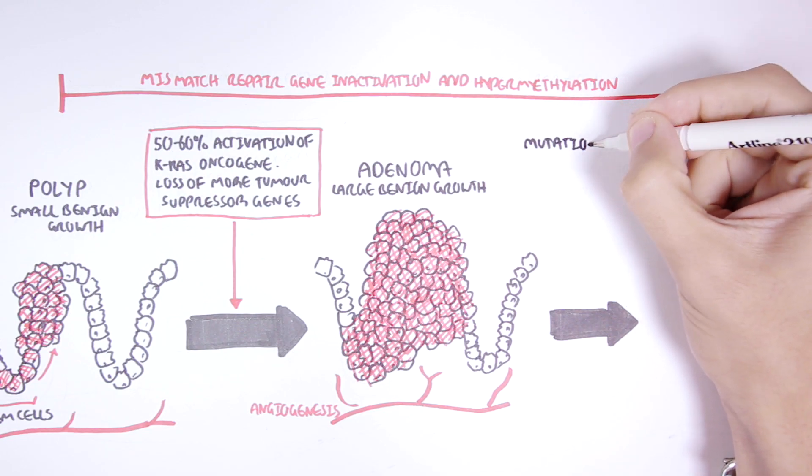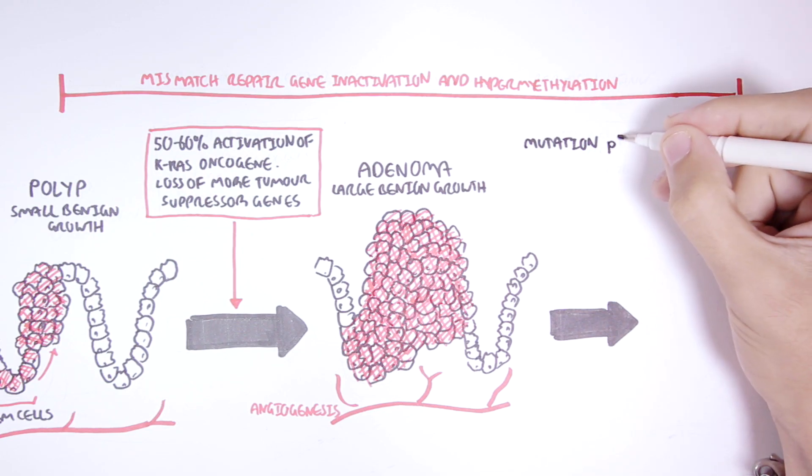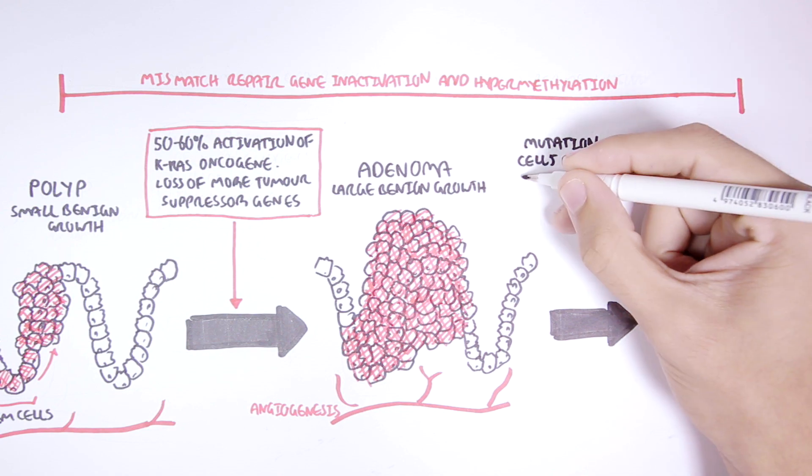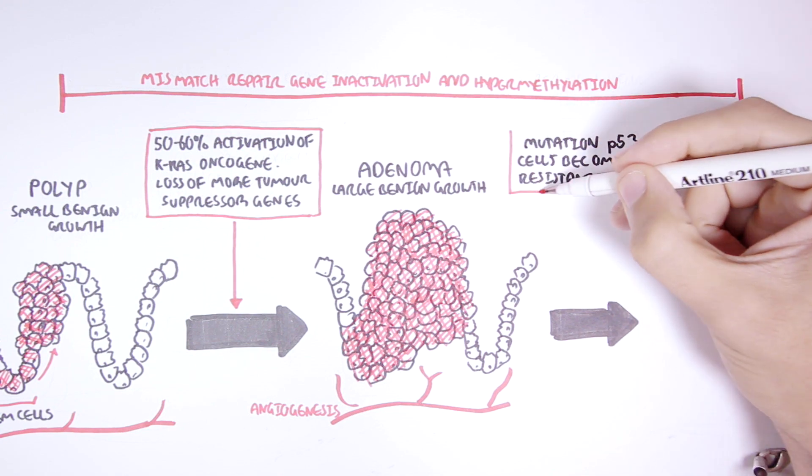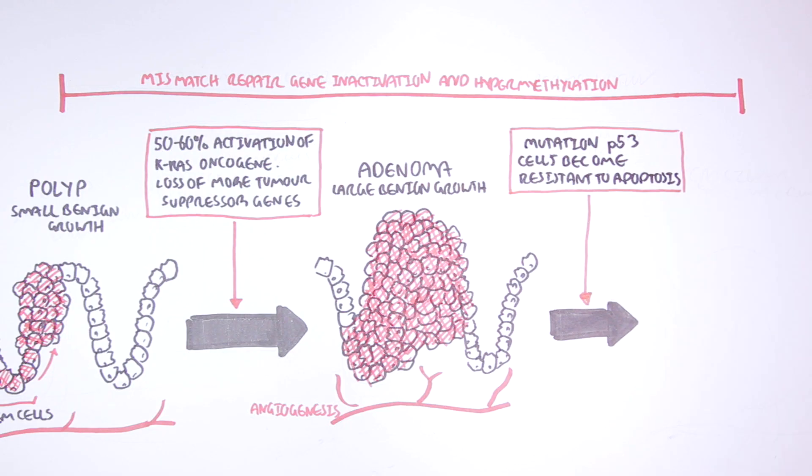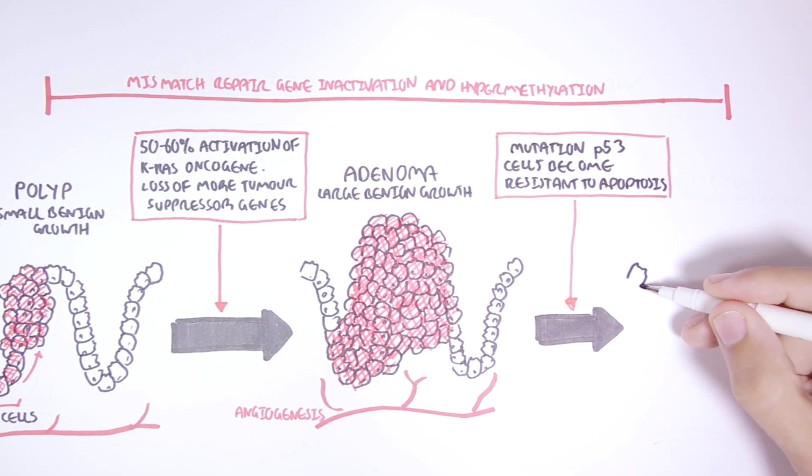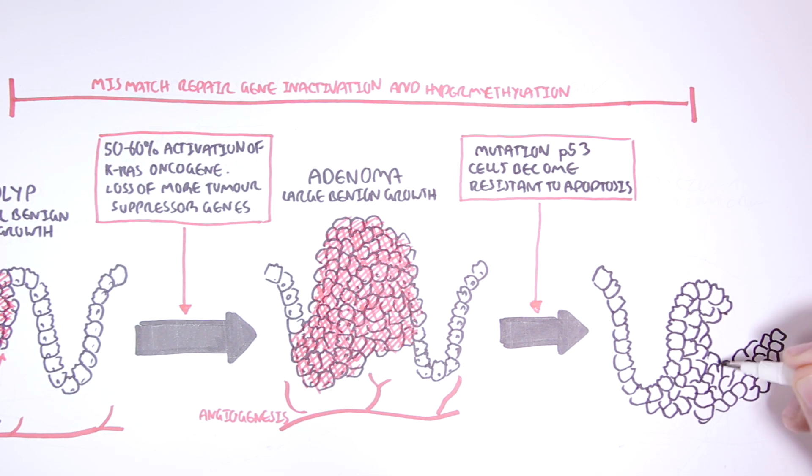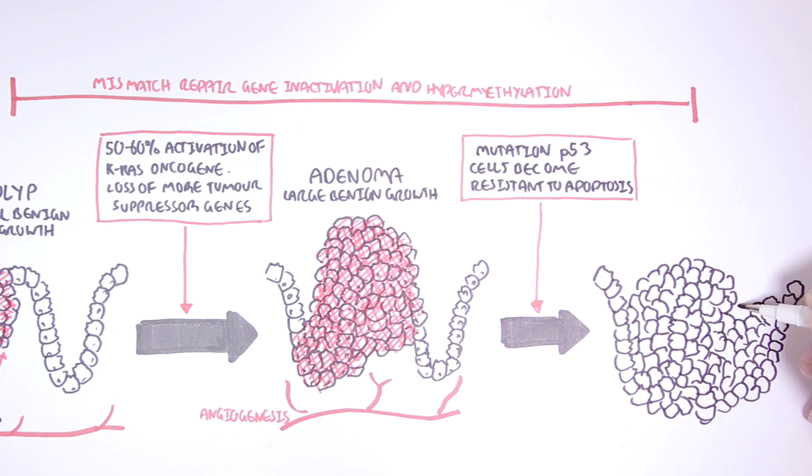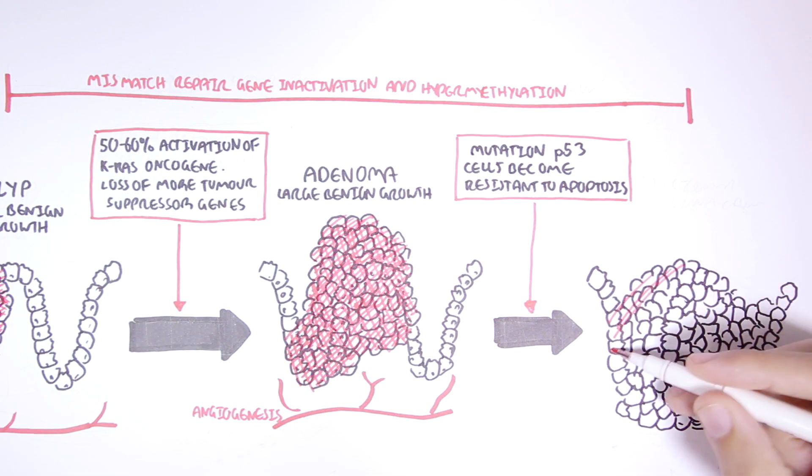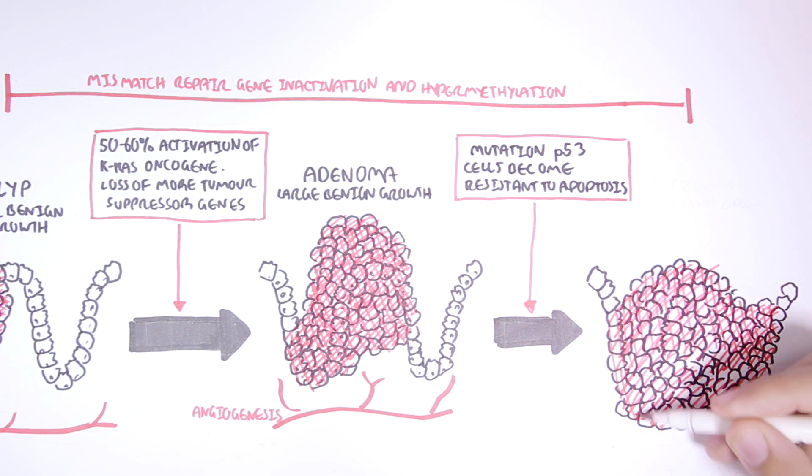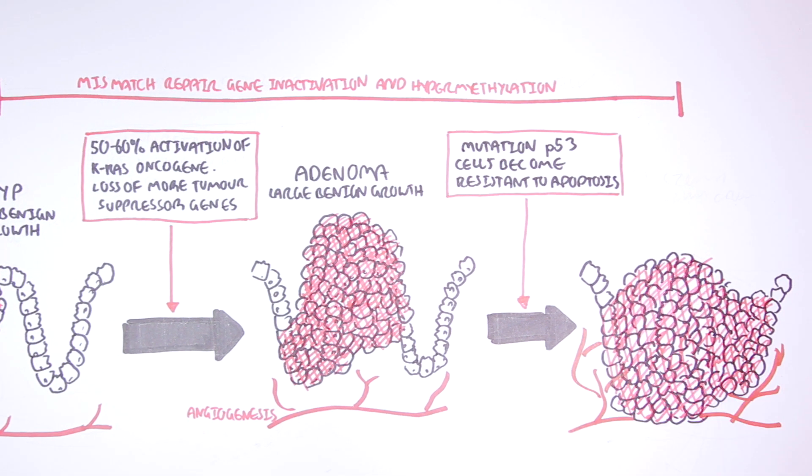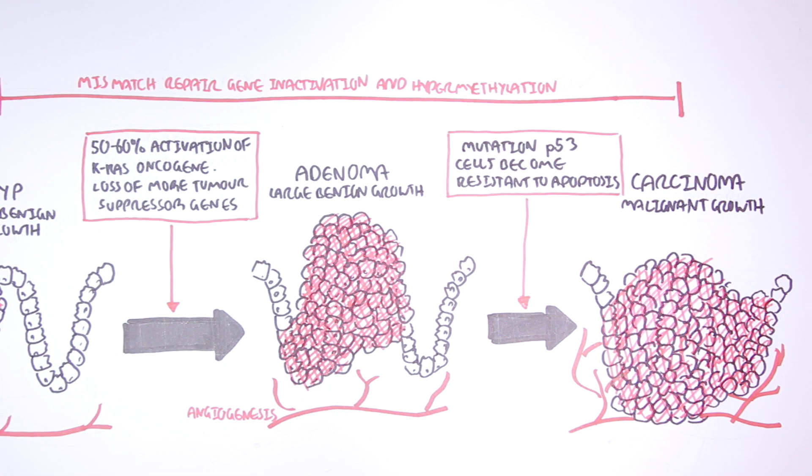A mutation in the TP53 gene tends to occur later in colon carcinogenesis. This mutation will cause resistance of cancer cells to apoptosis. So more cells will divide and less will die. This will cause a massive growth, which will cave in and keep growing, resulting in carcinoma, which is a malignant growth.